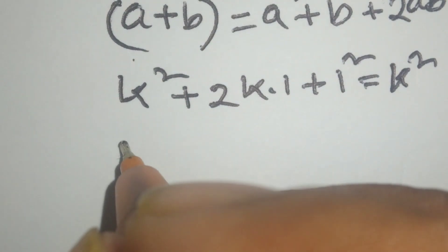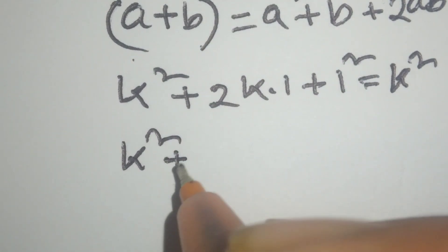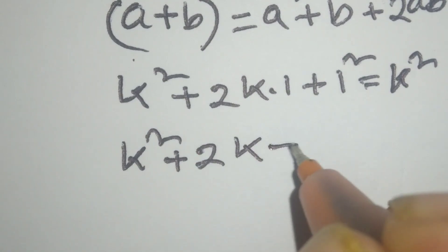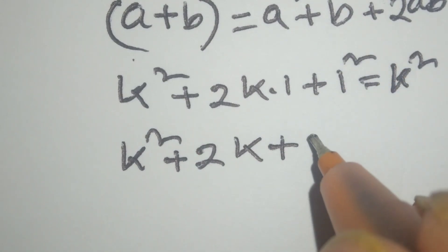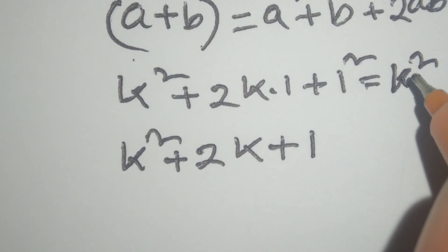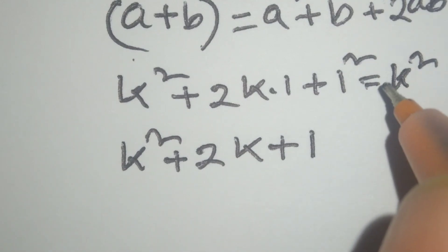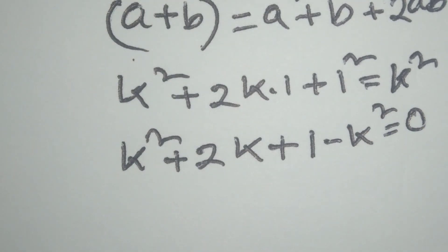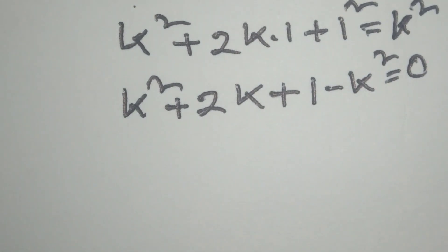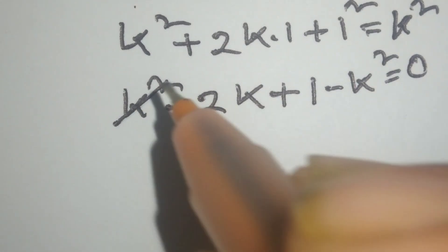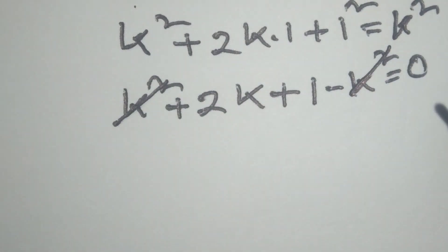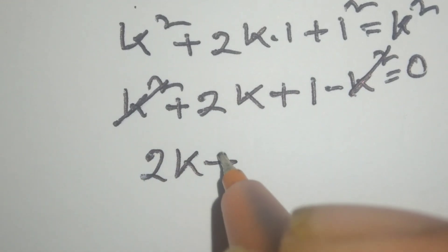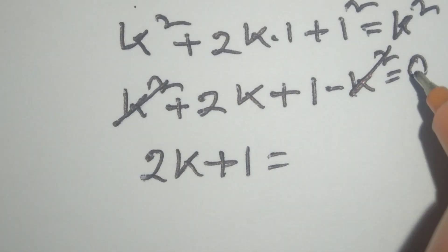We can write this as k square plus 2k times 1 plus 1 square equals k square. Now we will move this k square to the left side, so k square minus k square is equal to 0. The k square terms cancel, and here we remain with 2k plus 1, which is equal to 0.